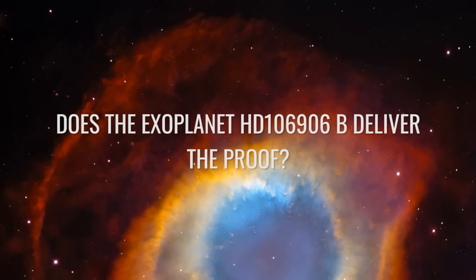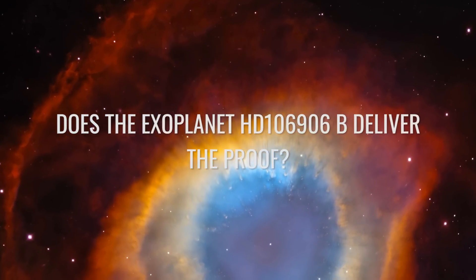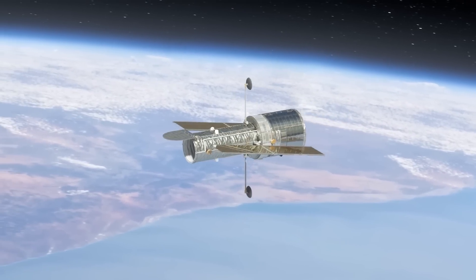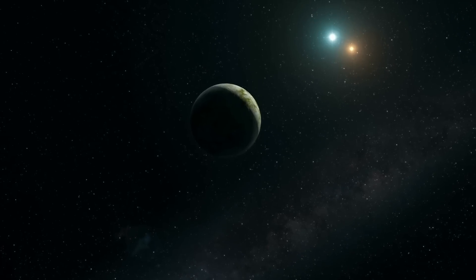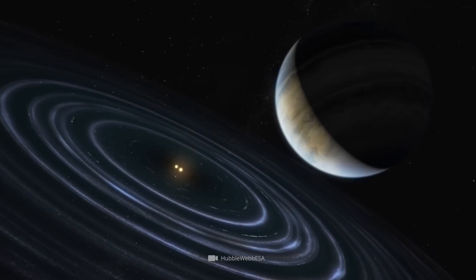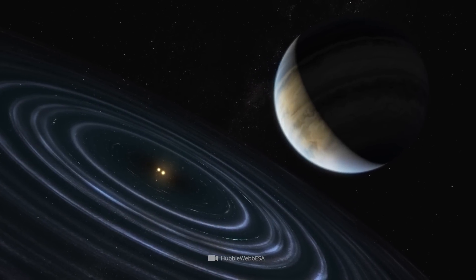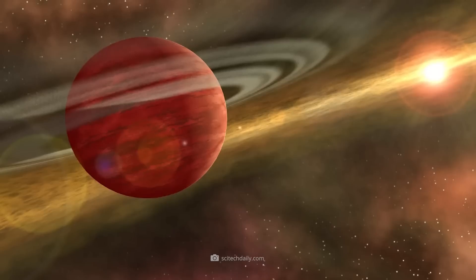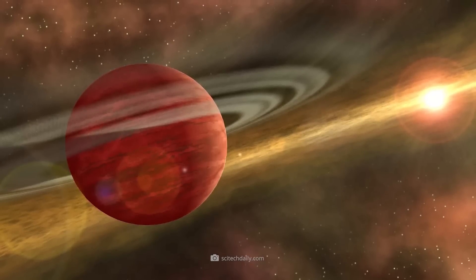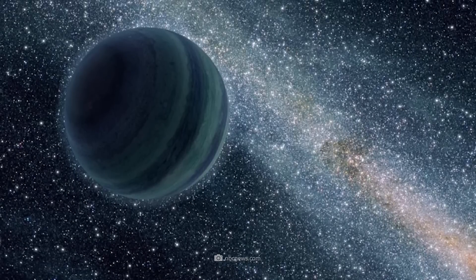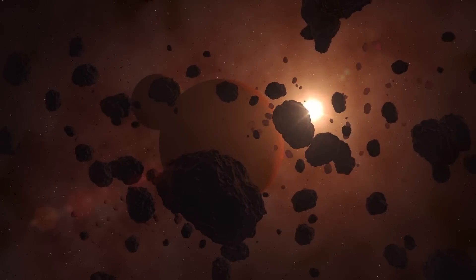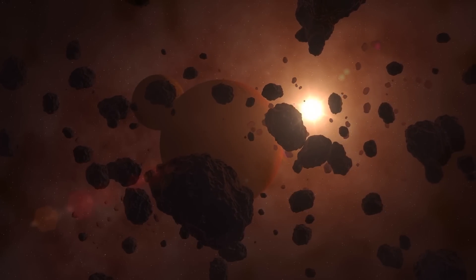Does the exoplanet HD 106906b deliver the proof? Not long ago, the Hubble Space Telescope discovered an exoplanet that is remarkably similar to the assumed behavior of Planet Nine. HD 106906b takes 15,000 years to orbit its binary star. This is mainly due to the weak gravitational pull of its stars and the large distance to them. In addition, this exoplanet has a very inclined and elongated orbit. And like Planet Nine, it moves through a debris ring at the far edge of its star system.